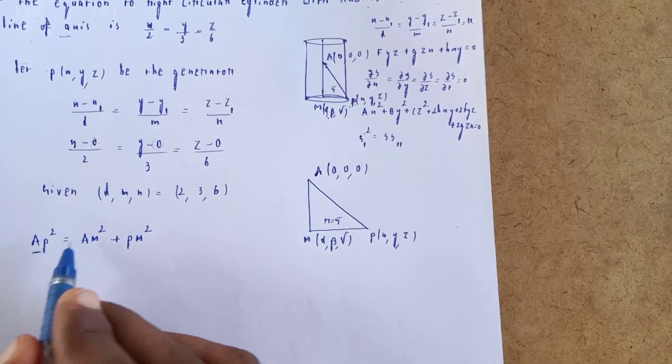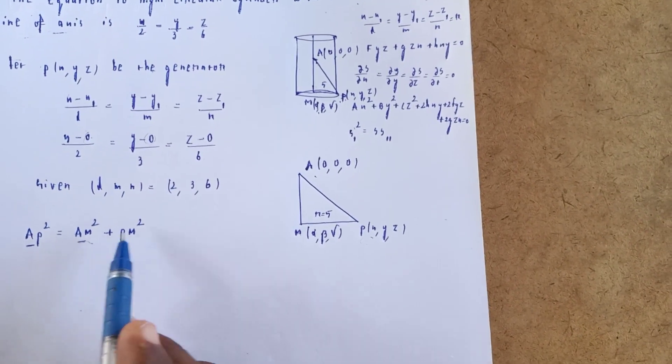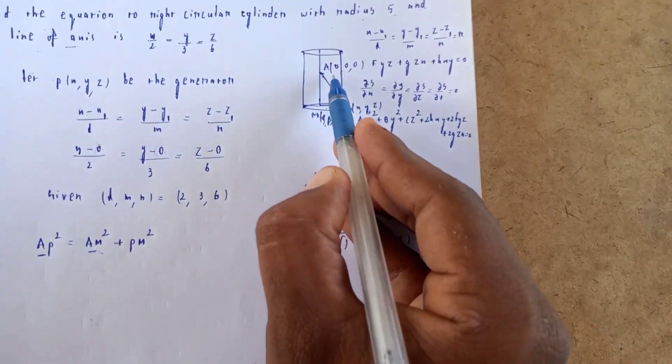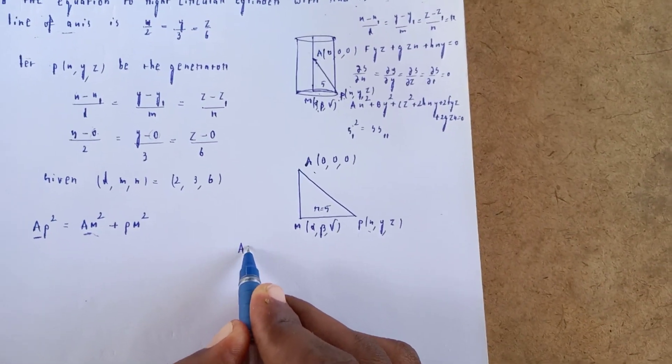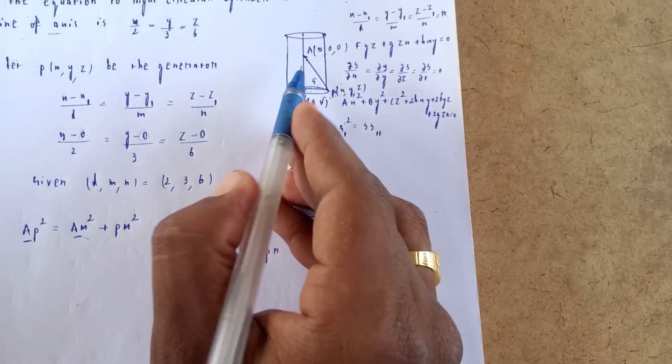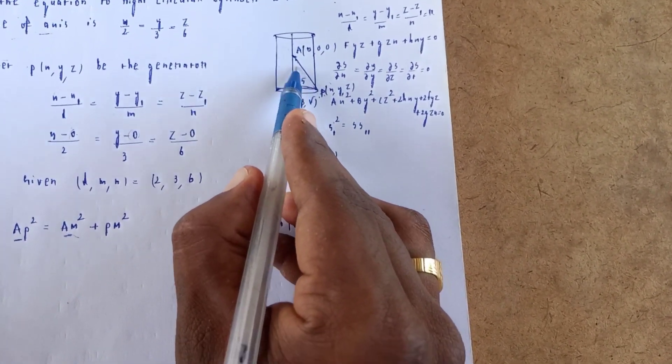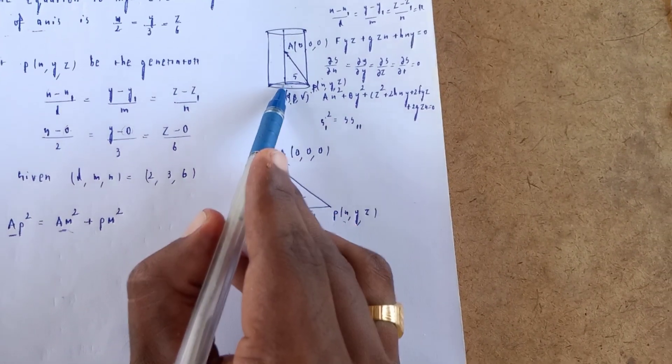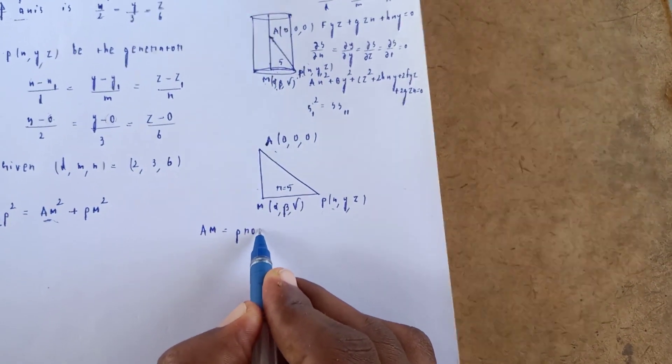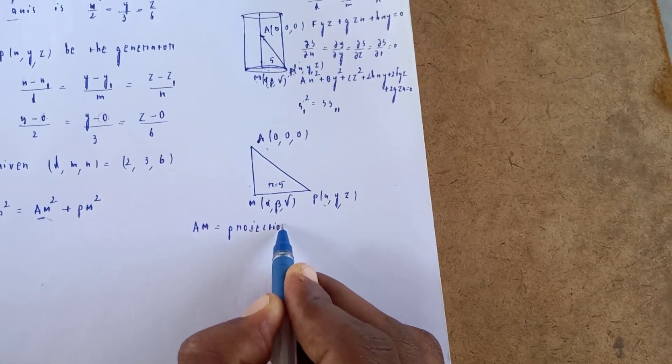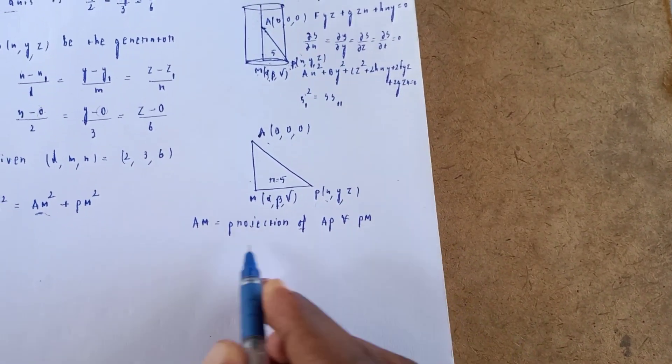The radius r = 5. PM distance is the projection of AP on the line. AM is the projection of AP on PM.